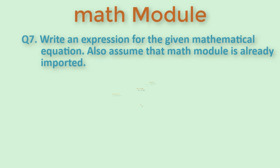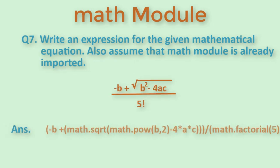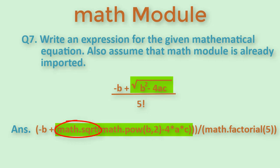Another similar question where we have to write an expression for the given mathematical equation. Here you will use the sqrt function to calculate the square root and you will pass b raised to the power of 2 minus 4 into a into c. You will then divide this numerator by math factorial function.